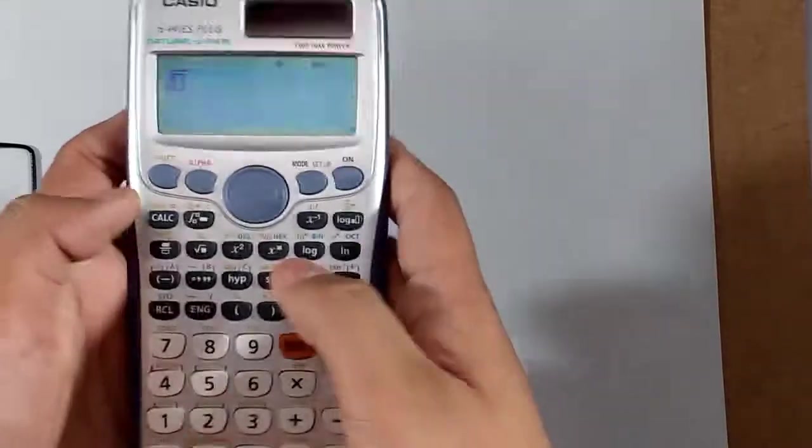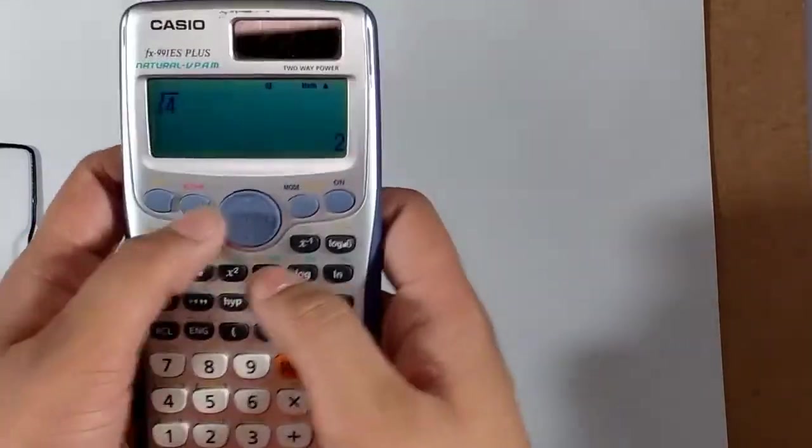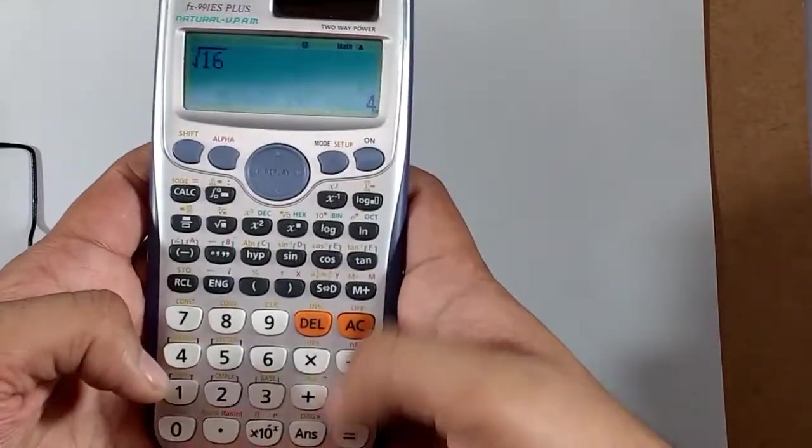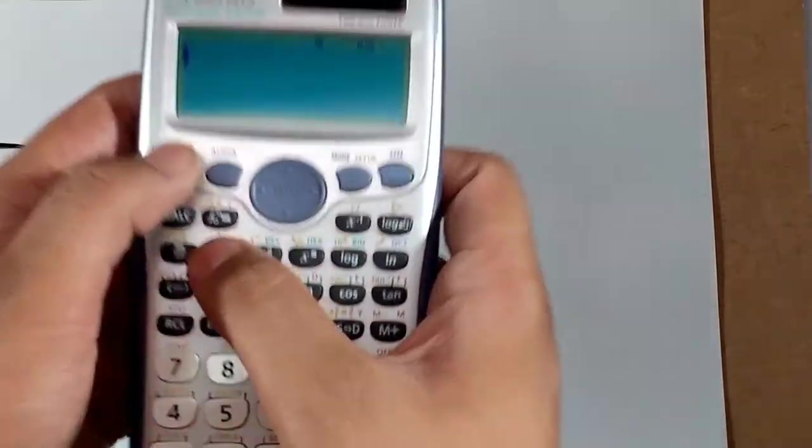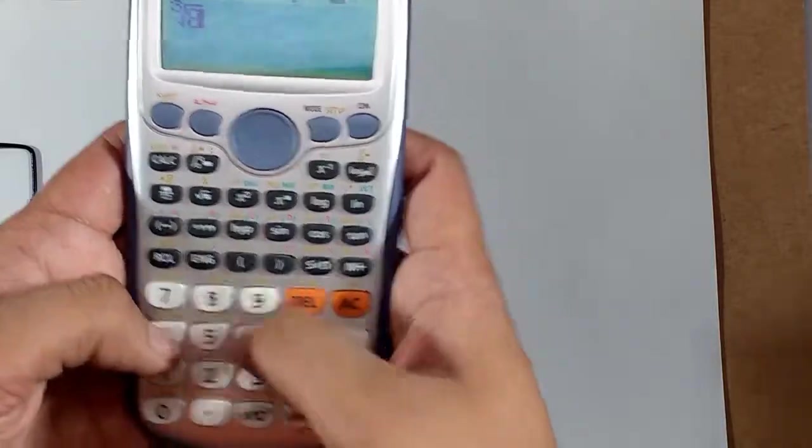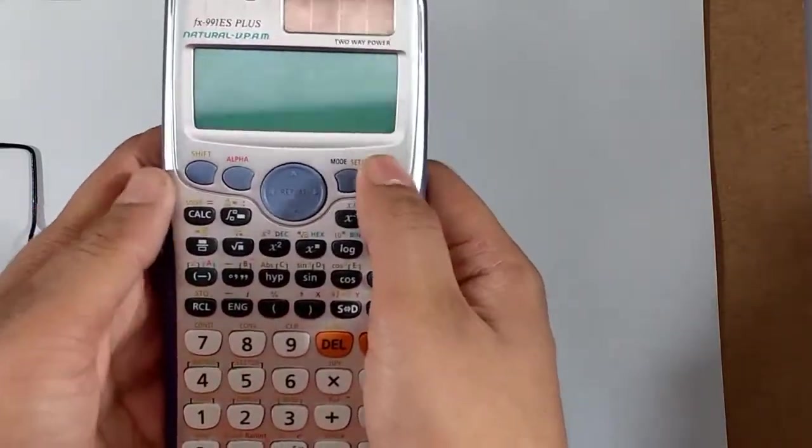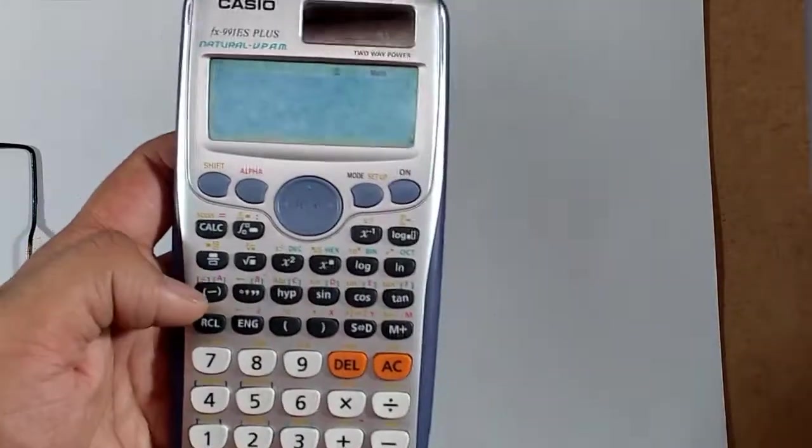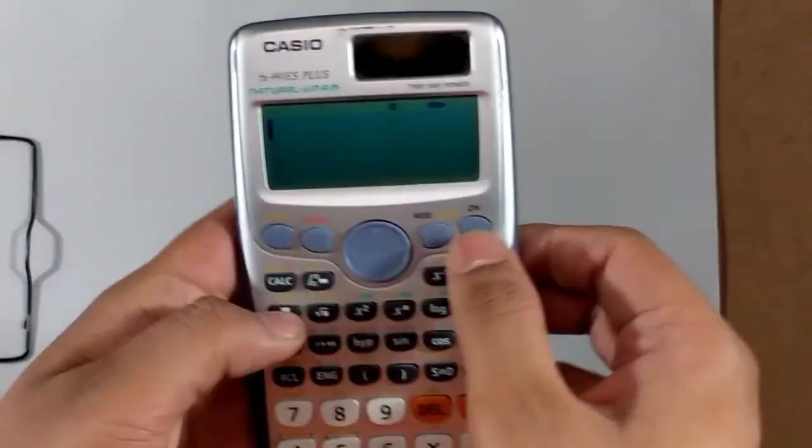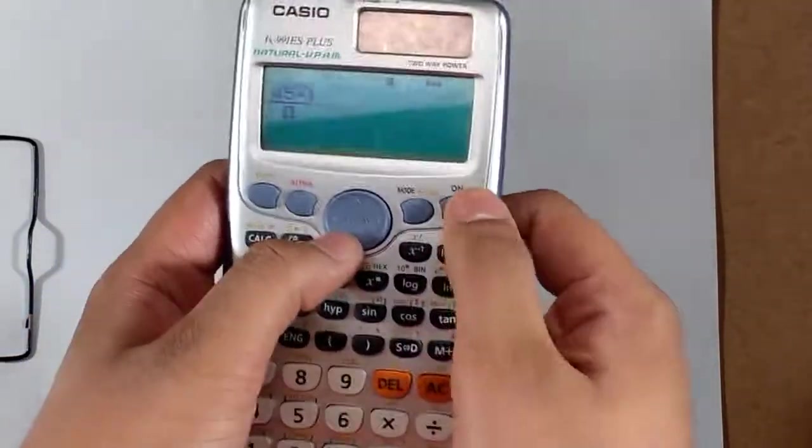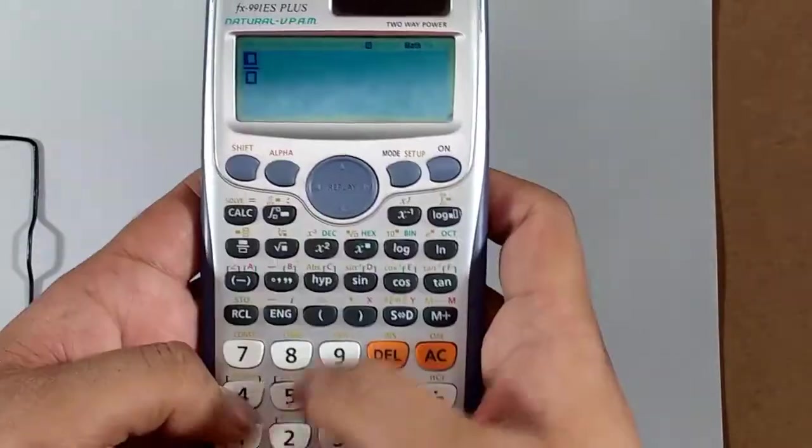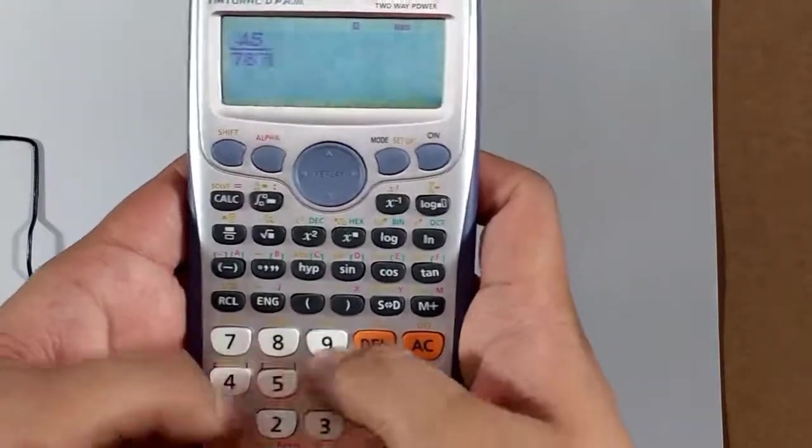Under root function, under root four, that was easy. Delete, backspace, 16, four, you get the pattern. Then there's the cube root function. Shift, eight. This will get the answer. Moving on to the next button, the fraction button. It's nothing, just to put the values in fraction, 45 divided by anything you want.